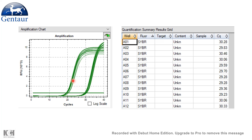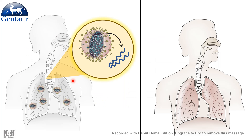Quantitative PCR can tell us about these things. We can take samples from a healthy individual or one suspected to be infected by this virus, isolate the RNA, make cDNA, and then take the qPCR reading.